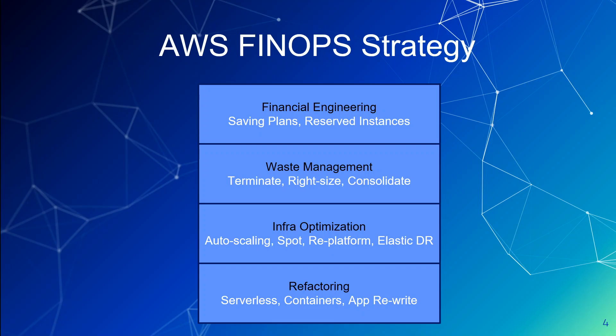One of the challenges in any FinOps strategy or cost optimization strategy is to know where to start and what exactly needs to be done. If you search Google, you will encounter various verbose methodologies, strategies, number crunching, and a lot of stuff. And then you get really confused about what really needs to be done to save cost in AWS or any cloud for that matter.